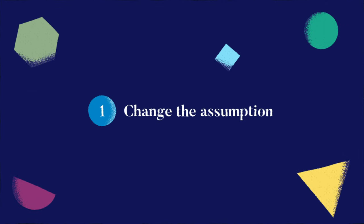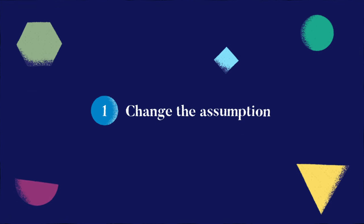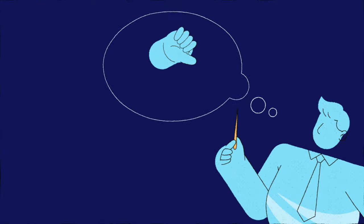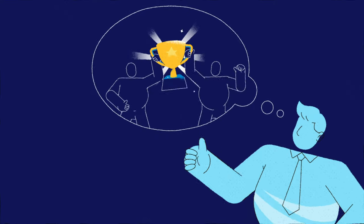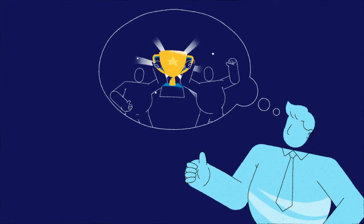First, change our assumptions about teams' intelligence and capabilities. Believe that our team is smart enough to do their job well without us. Our job is only to show them how and be there when they need us.